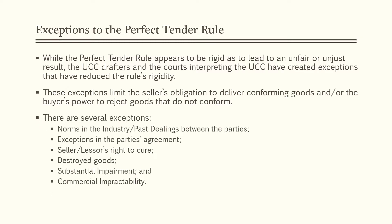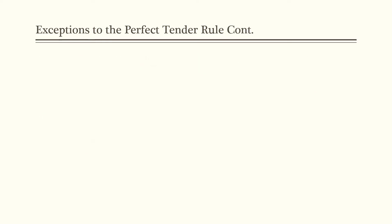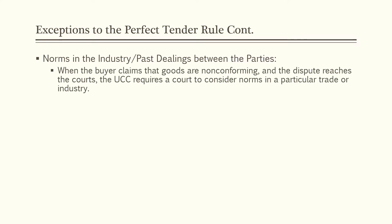There are several exceptions to the perfect tender rule: norms in the industry, past dealings between the parties, exceptions in the parties' agreement, the seller's or lessor's right to cure, destroyed goods, substantial impairment, and commercial impracticability. The first exception is norms in the industry or past dealings between the parties — courts usually consider these together. When a buyer claims goods are non-conforming, the UCC requires the court to consider norms in a particular trade or industry.